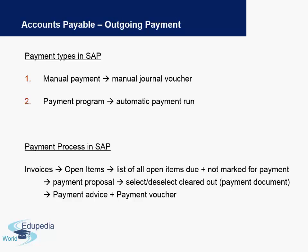Now let's discuss outgoing payments. Outgoing payments is a vast topic in SAP and can be mainly divided into two parts. The first is manual payment, where you make a manual journal entry and manual journal voucher for the vendor. The second is the automatic payment program, where once you have set up certain parameters in your vendor master, you can run an automatic payment run on a batch schedule — daily, weekly, monthly, etc.